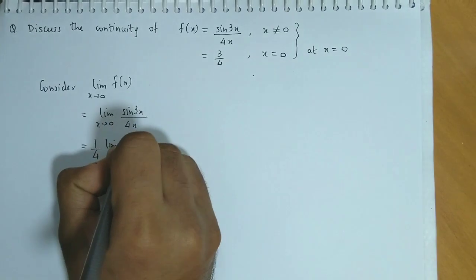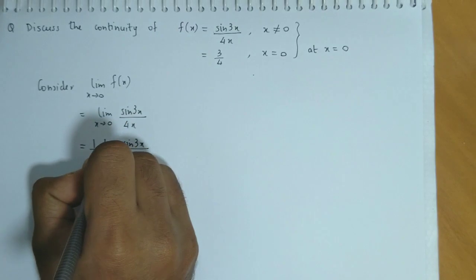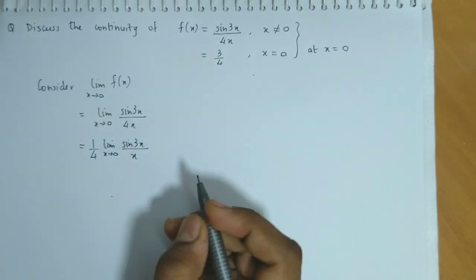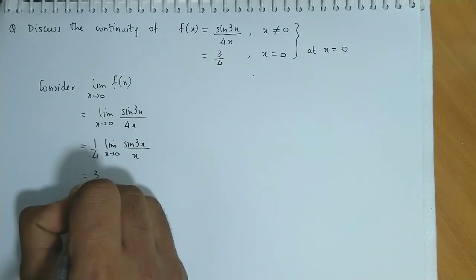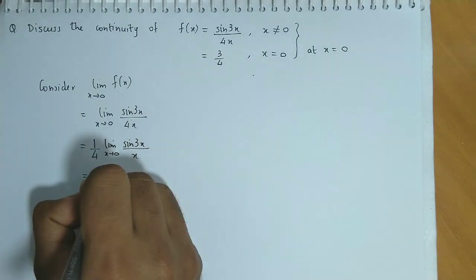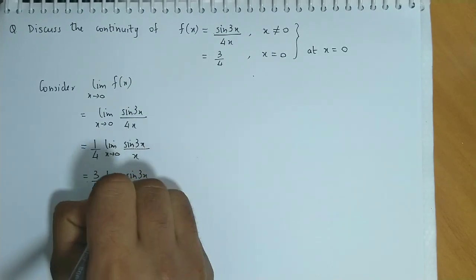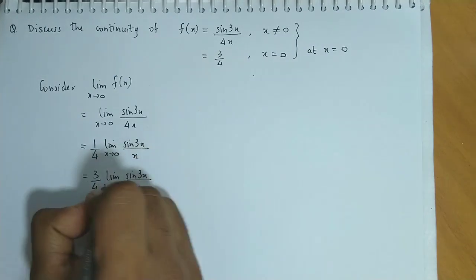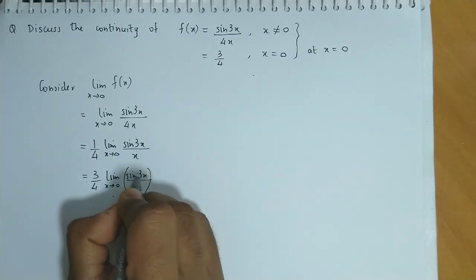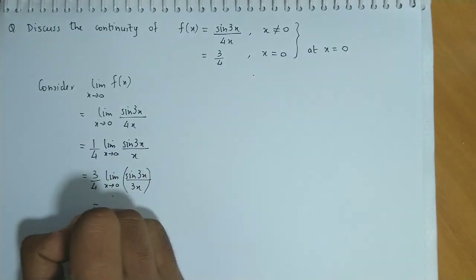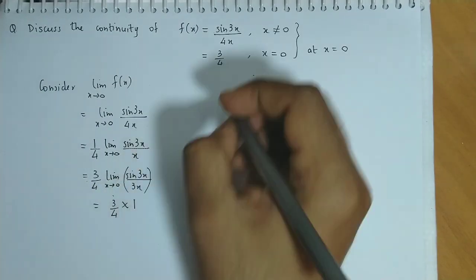Limit of sin 3x upon x as x approaches 0. Now we multiply and divide by 3, so 3 by 4 into limit of sin 3x upon 3x as x approaches 0. So now this limit value is 1, so this would be 3 by 4 into 1.